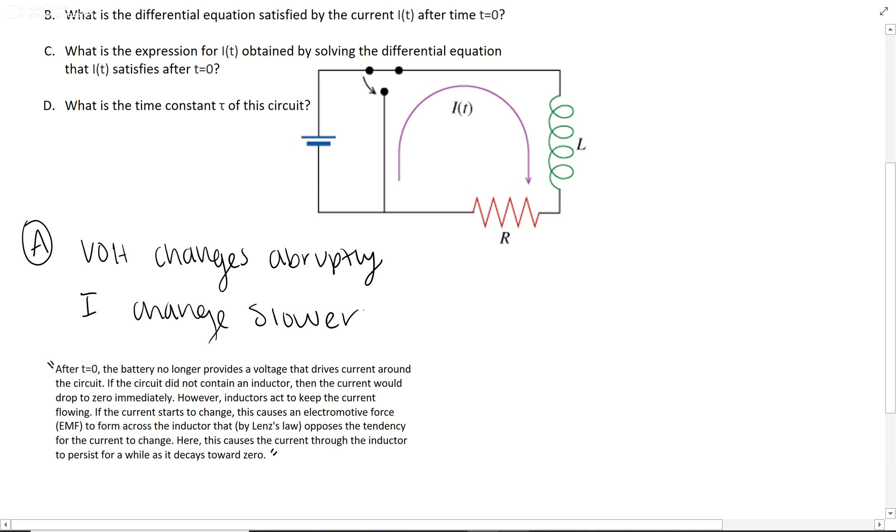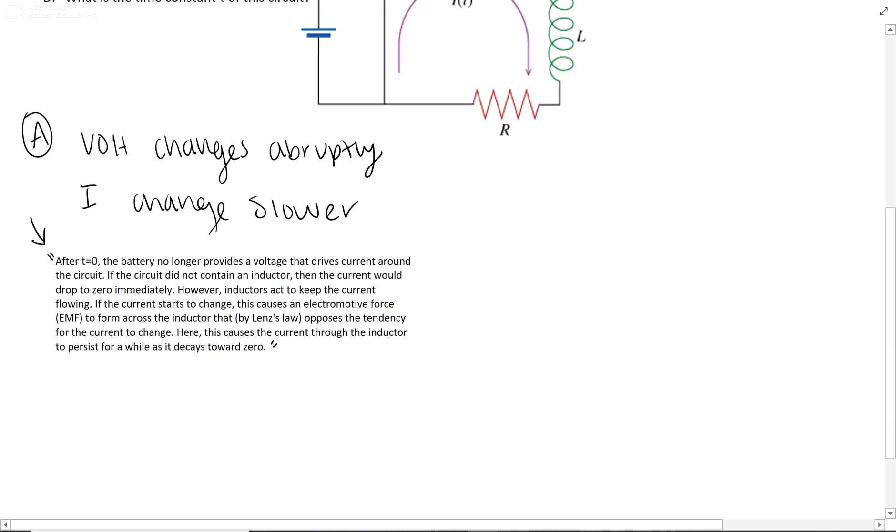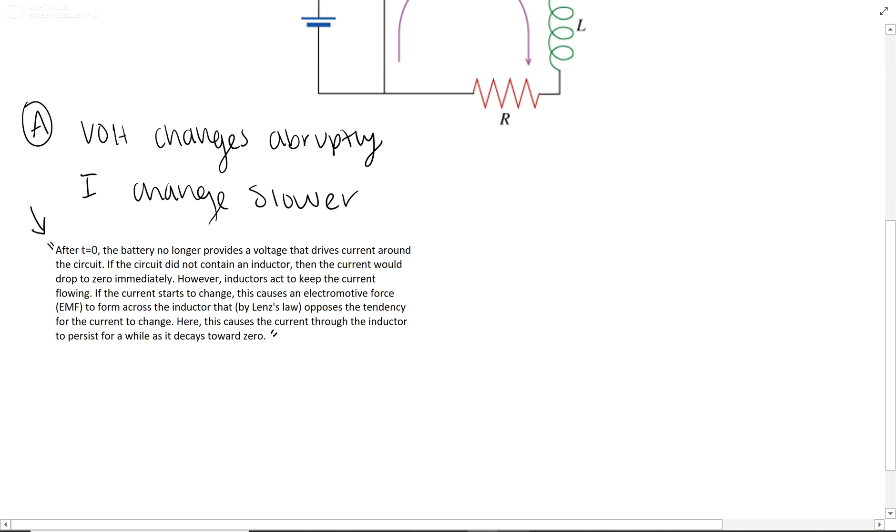When you get it right, this is the paragraph right here that they tell you, which basically just says that the inductor is the thing that keeps the current moving. It keeps it flowing because when it starts to stop, they have something that counteracts it. There's the paragraph if you want to read that.